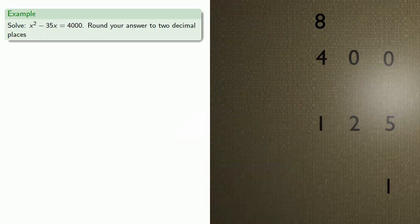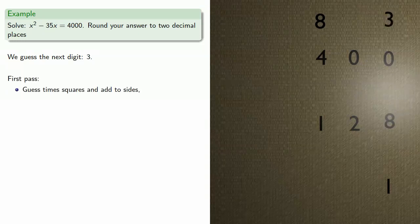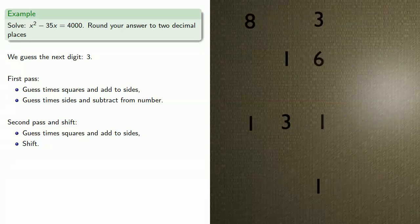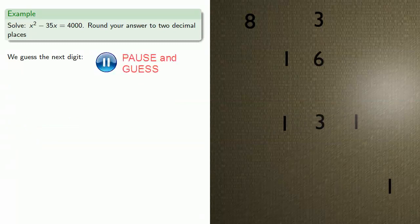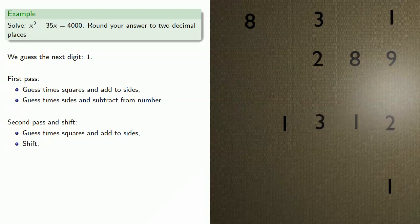At this point, everything proceeds as before. We guess the next digit, make our first pass — guess times squares and add to sides, then guess times sides and subtract from number. Our second pass: guess times squares and add to sides, and shift. To avoid running out of room, we shift everything over a couple of places, then move the sides one place and the squares two places. We guess the next digit: 1. We make our first pass, then our second pass. Guess and shift.